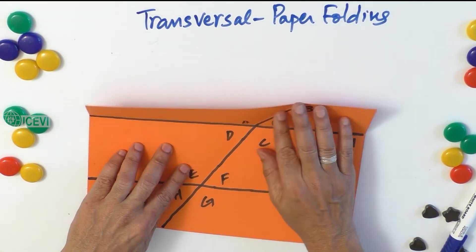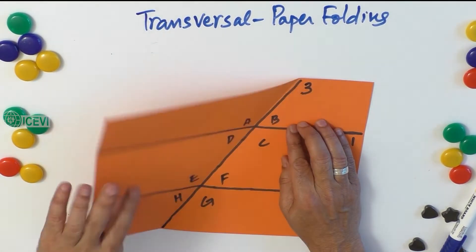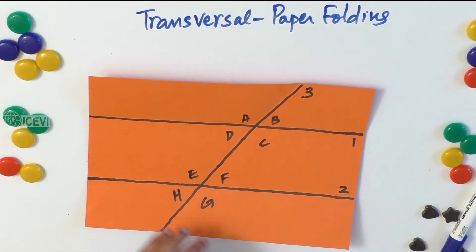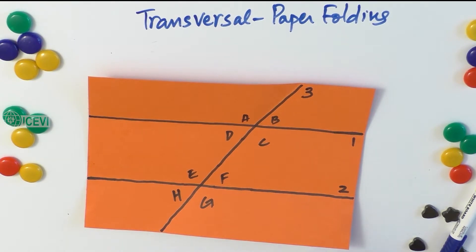Now use the paper strip to find out the angle B.